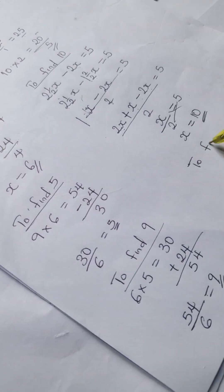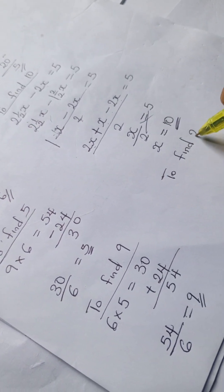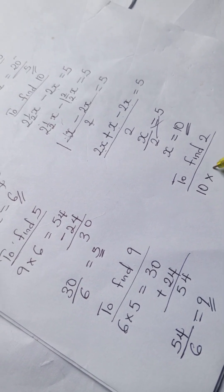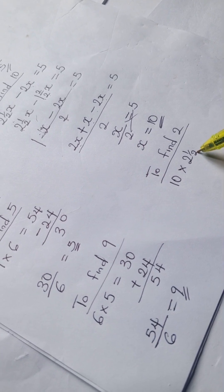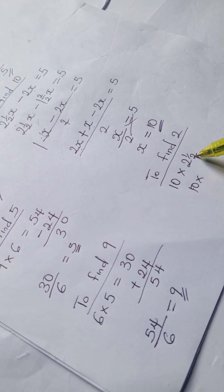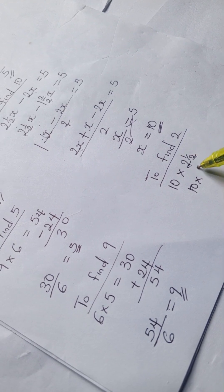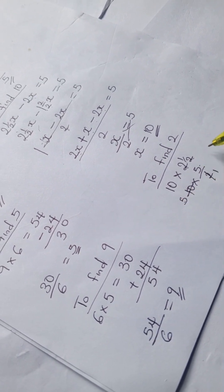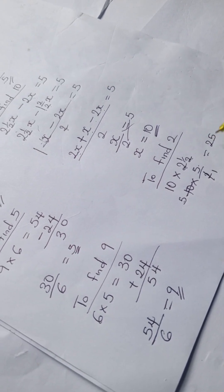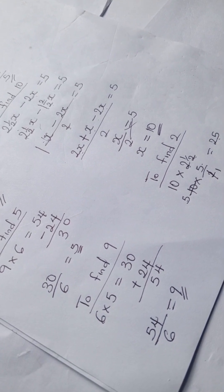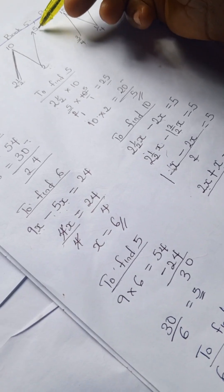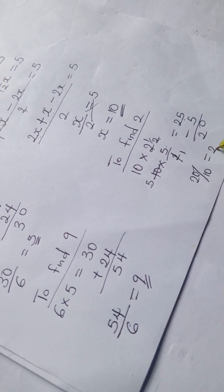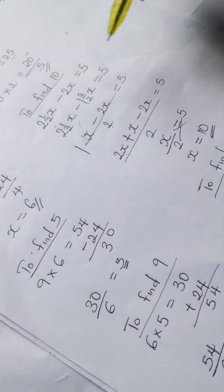To find 2: we have 10 times 2 and 1/2. Converting: 2 times 2 is 4, plus 1 is 5/2. So 10 times 5/2 equals 25. Then 25 minus 5 equals 20. So 20 divided by 10 equals 2.